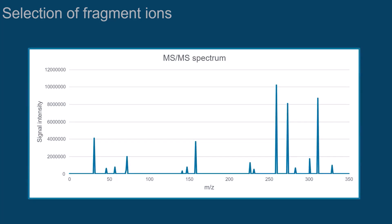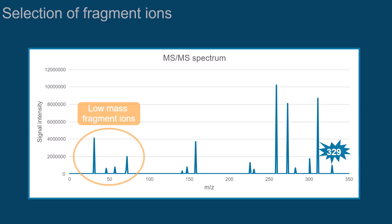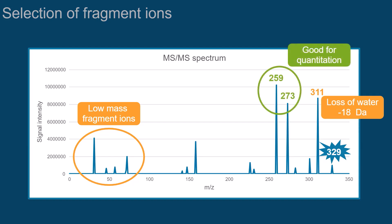Let's discuss the selection of the best fragments for our MRM experiment with the help of this example. The singly charged precursor of m/z 329 shows a variety of fragments with different intensities and m/z ratios. Avoid selecting low-mass fragment ions as many molecules can form them. The same applies for the loss of water or ammonia. These are two intense ions, which are most likely good for quantitation.